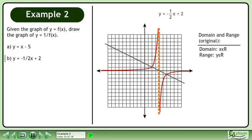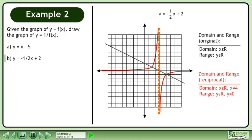The domain and range of the original graph is x belongs to the set of real numbers and y belongs to the set of real numbers. The domain of the reciprocal graph is x belongs to the set of real numbers with the restriction that x cannot equal 4. The range is y belongs to the set of real numbers and the y value will never equal 0. The asymptote equations are x equals 4 and y equals 0.